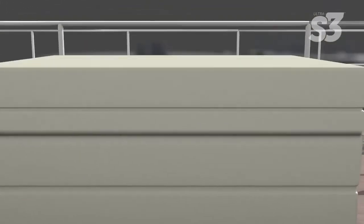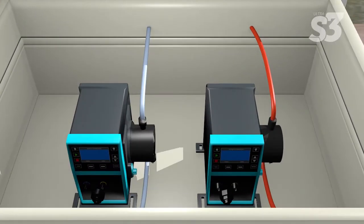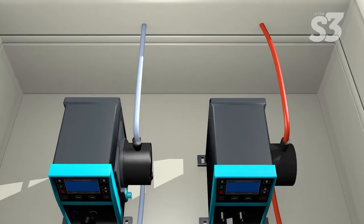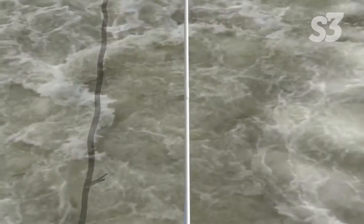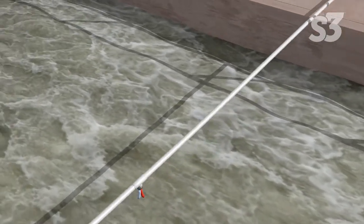Using peristaltic metering pumps, introduce the Ultra S3 and oxidant into the system. In this example, we're using hydrogen peroxide for the oxidant. Deploy the solution into the system as far upstream as possible to provide maximum treatment time.